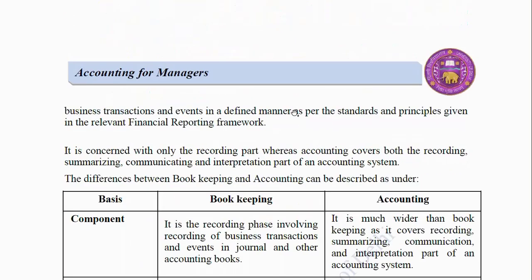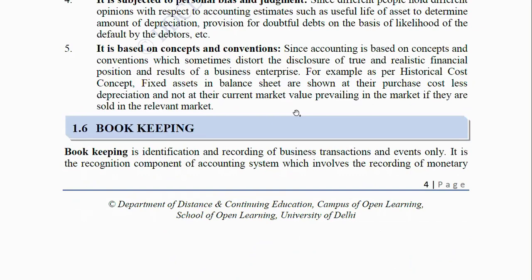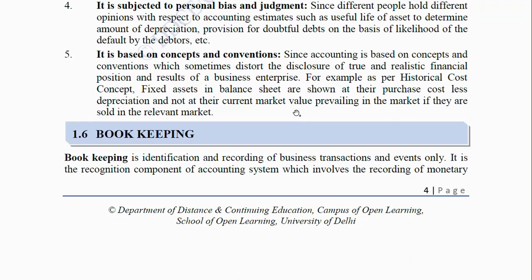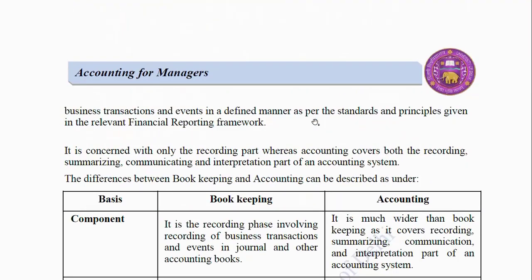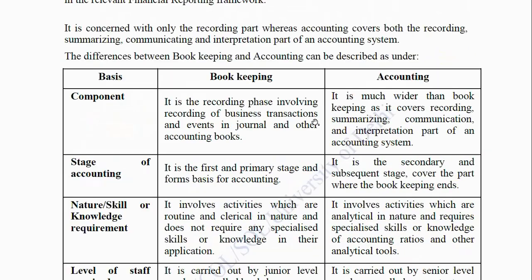Bookkeeping: Bookkeeping is the identification and recording of business transactions and events. It is the recognition component of an accounting system, which involves the recording of monetary business transactions and events in a defined manner as per the accounting standards and principles given in the relevant financial reporting framework. It is concerned with only the recording part, whereas accounting covers recording, summarizing, communicating and interpretation. The differences between bookkeeping and accounting are described as under.